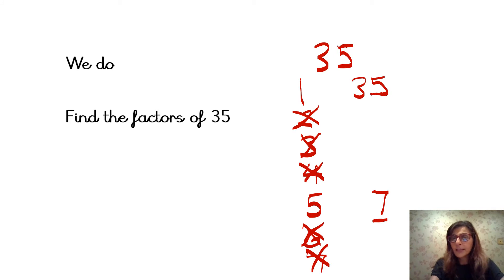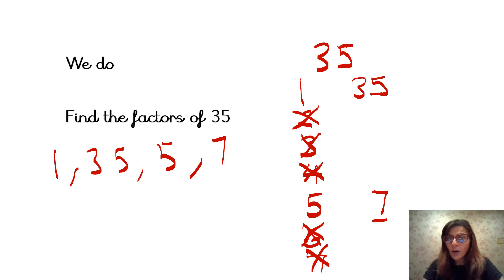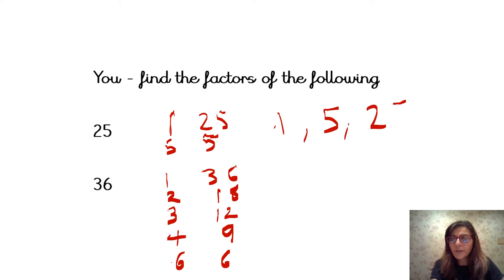So let me list the factors. We've got 1 and 35 as a factor pair, and 5 and 7. So these are the factors of 35. For 25, you should have 1 and 25 (1 times 25) and 5 times 5. Because we don't need to repeat the number 5, the factors are 1, 5, and 25. Those are the numbers that go into 25.